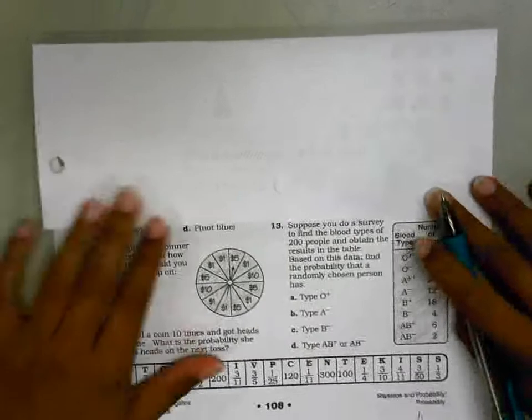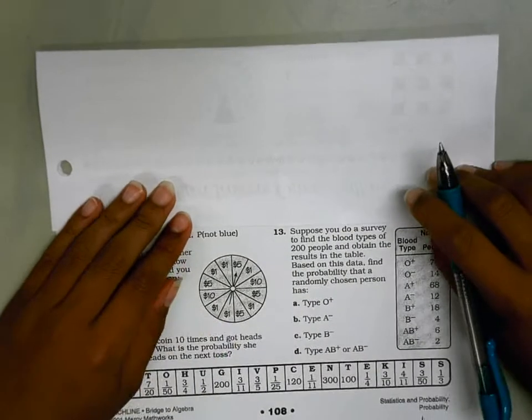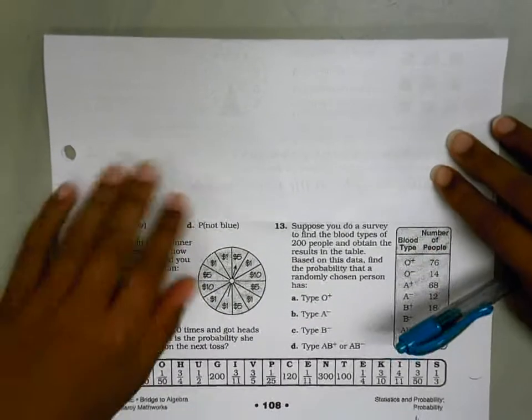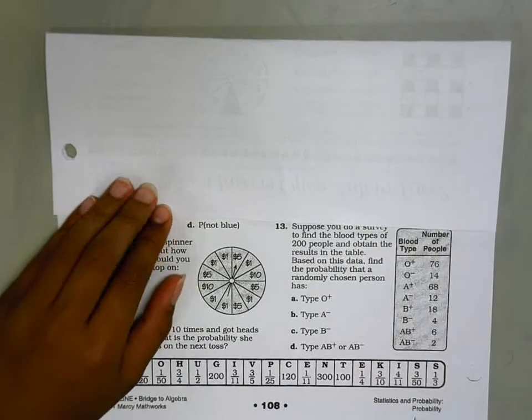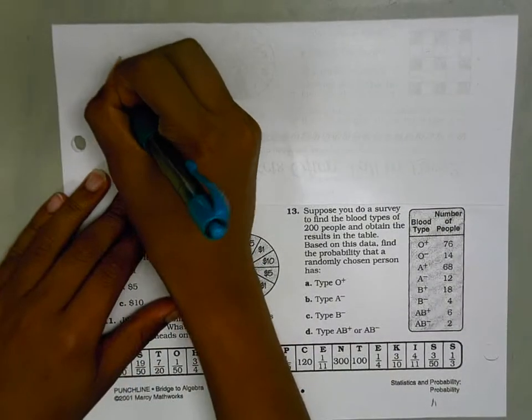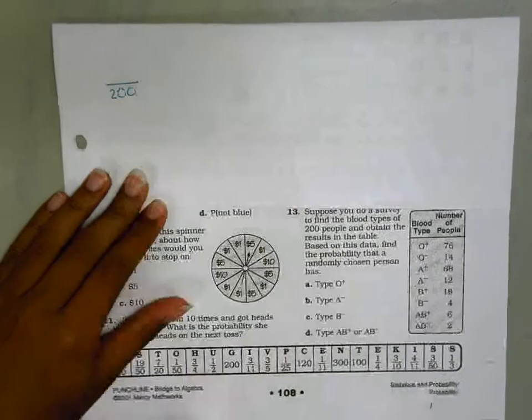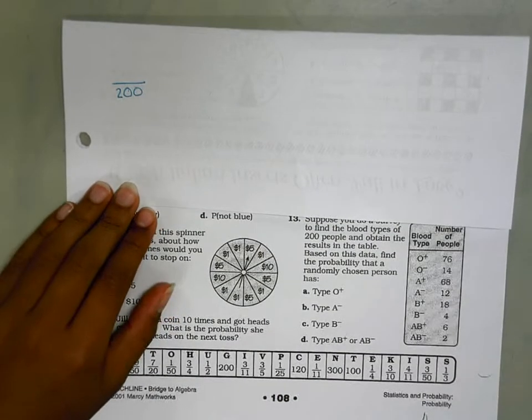Okay guys, this is me, Sean, and we're going to do number 13. It says, suppose you do a survey to find blood types of 200 people. So I'll start with 200 as my denominator and obtain the results in the table.